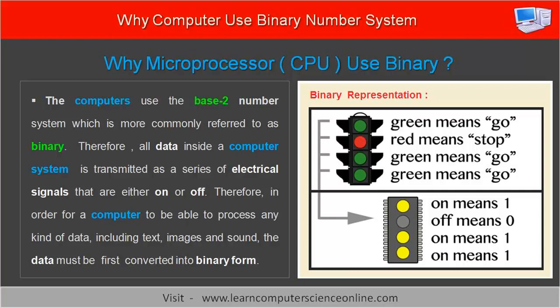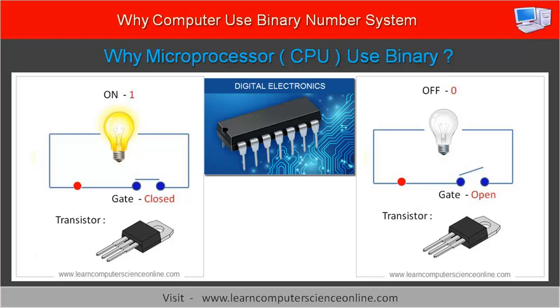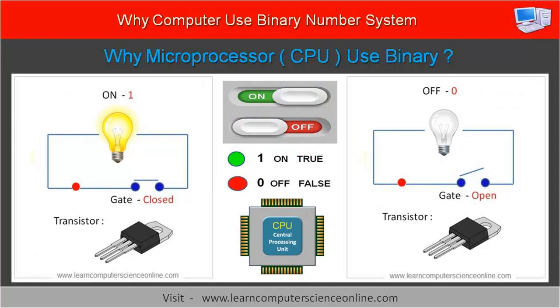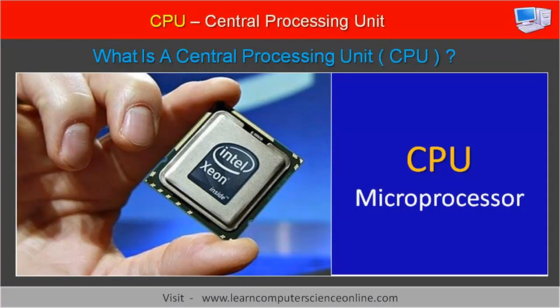The computer system is also a digital electronic device which consists of a number of electronic components. In digital electronics, it becomes very easy to define two states — the on state and the off state — using the binary equivalent. It is the microprocessor that provides the processing power to the computer system, and executes the program to perform any task.